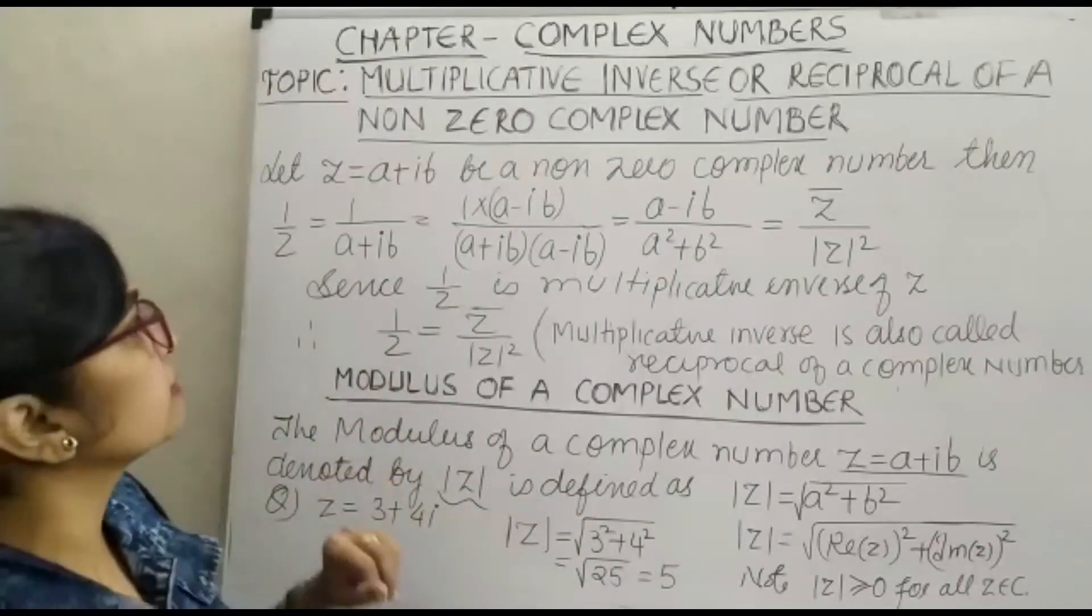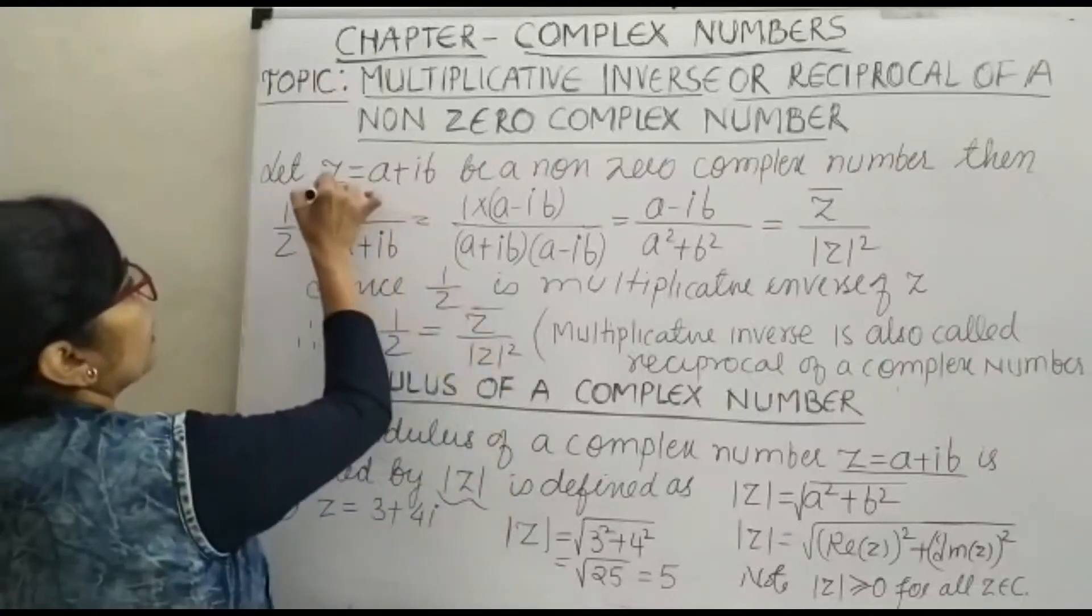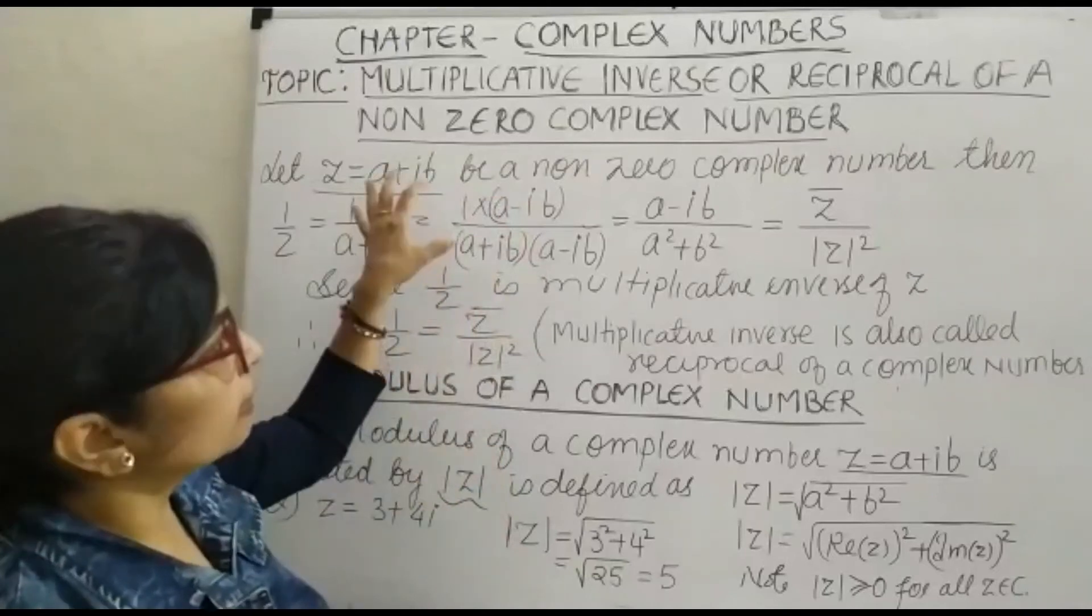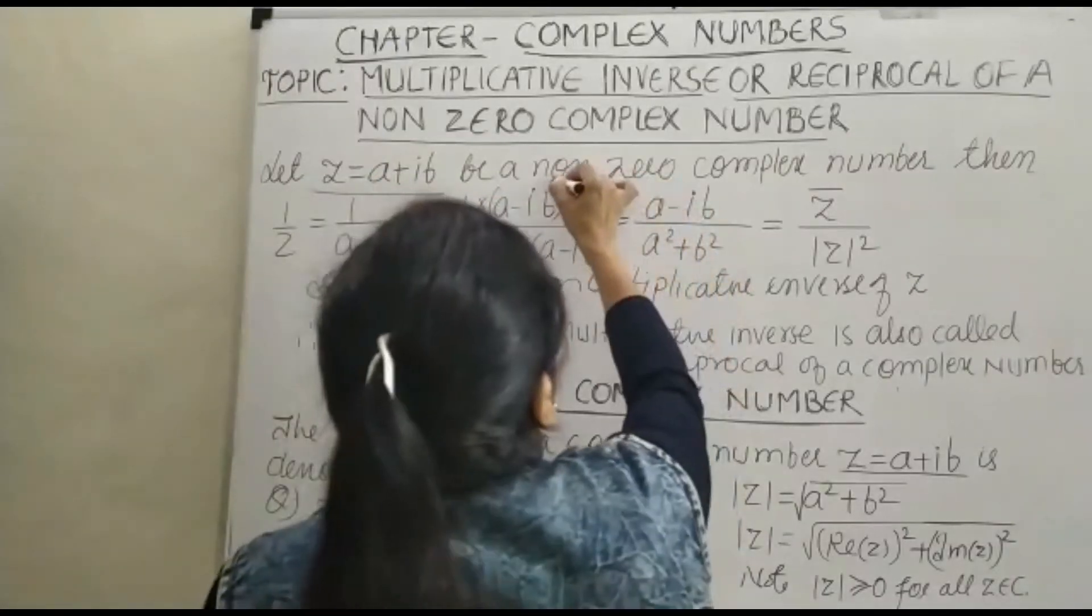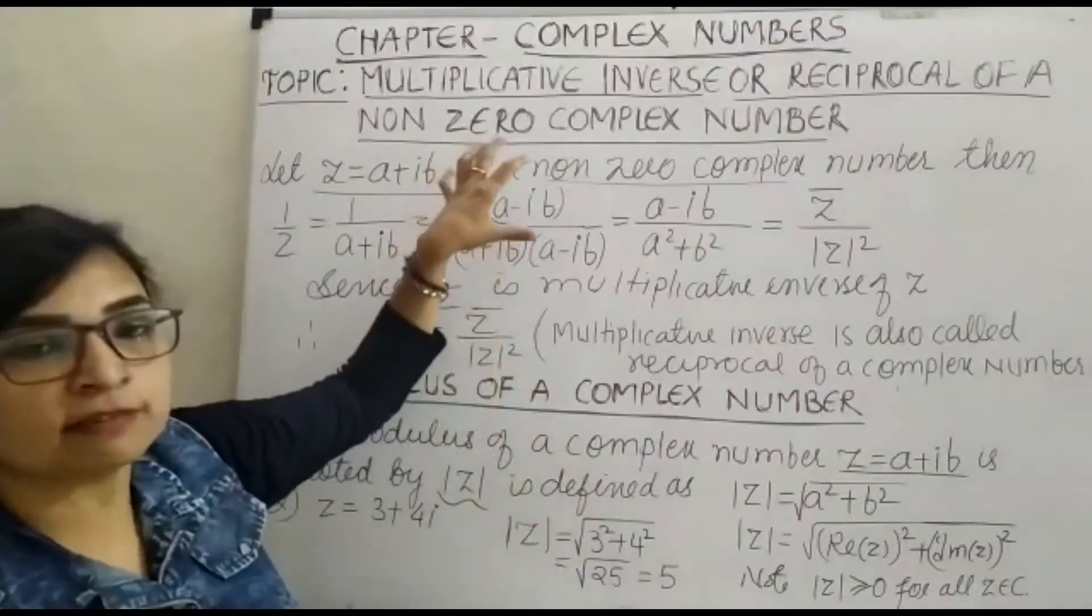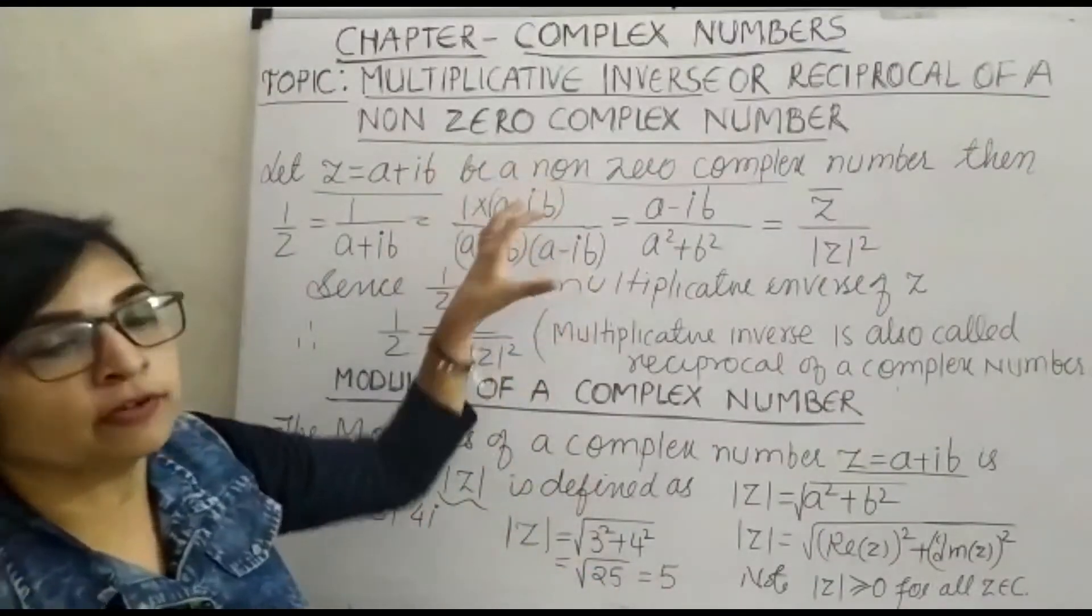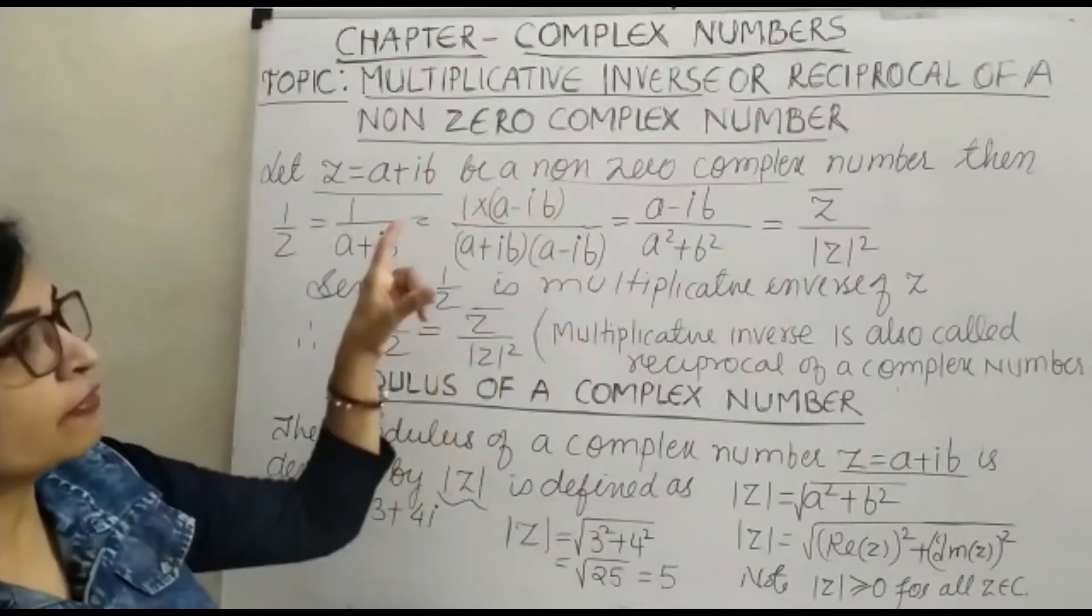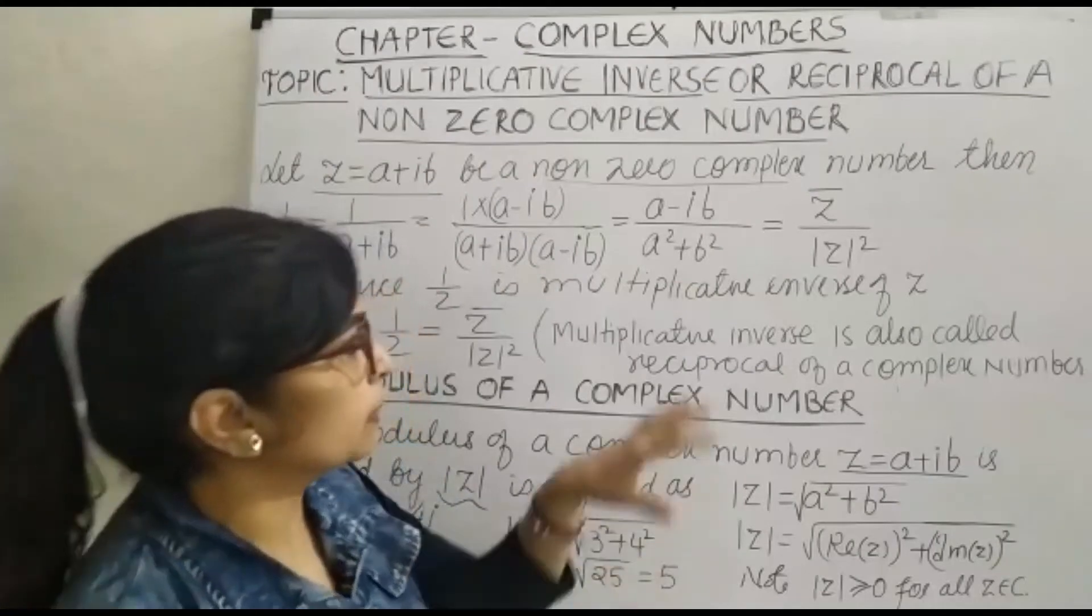We have a complex number z equals a plus ib. This is non-zero because division by zero is not defined. That is why it is important to note that your given complex number is a non-zero complex number. Then only we can find its reciprocal or multiplicative inverse.